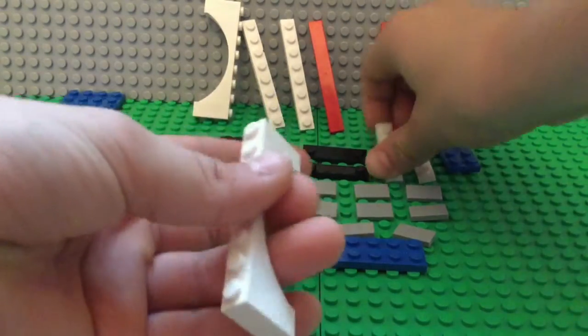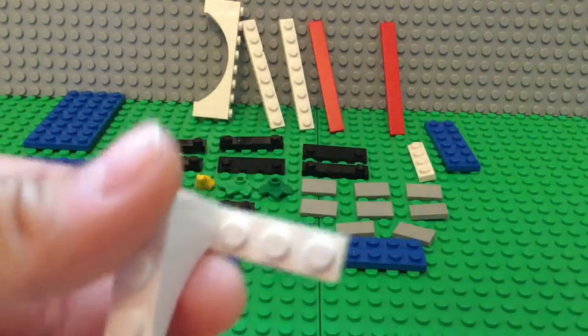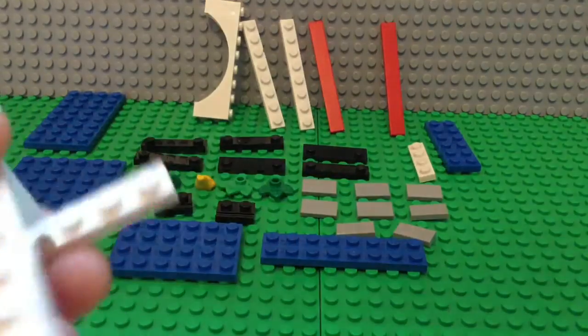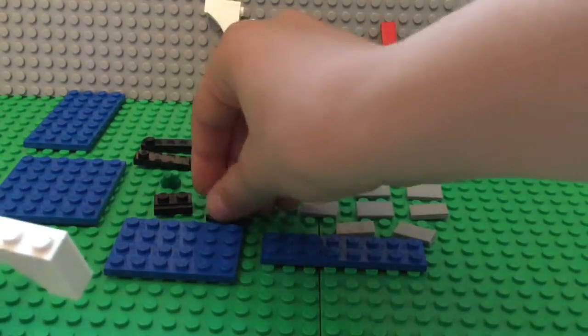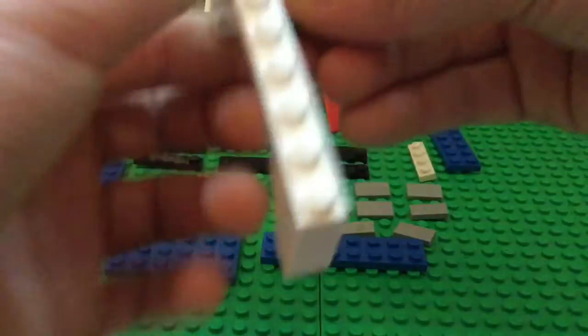Start out with the curved piece and you're gonna take one of one by four white plates. Then I'm gonna take one of these black ones with a little silver on it, and a one by two black.